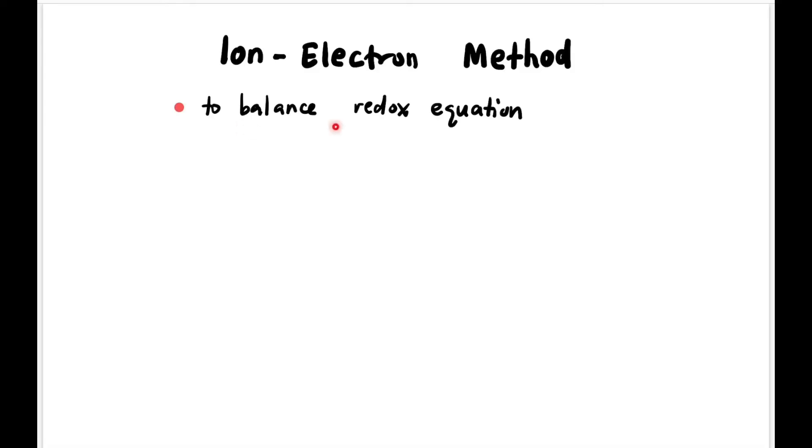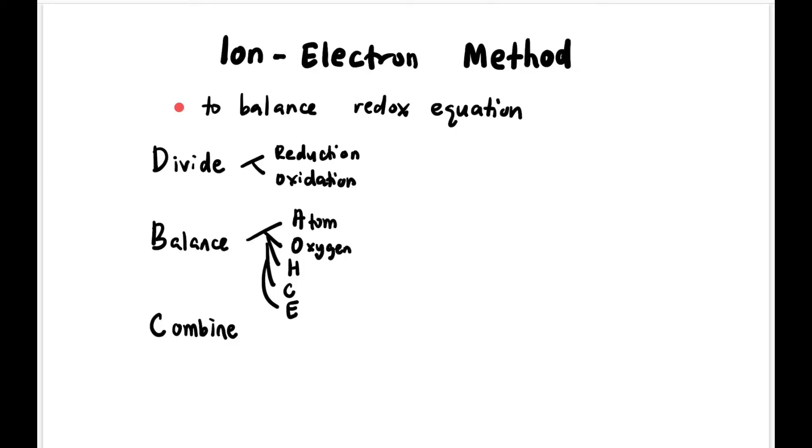Now let's learn the ion-electron method to balance the redox equation. Basically it consists of three main parts: divide, balance, and combine. Where you have to divide the equation into two parts - reduction and oxidation. And then you have to balance OAHE - what is OAHE? OAHE stands for atoms, oxygen, hydrogen, charge, and also electron. And then the last part is combine the equation.